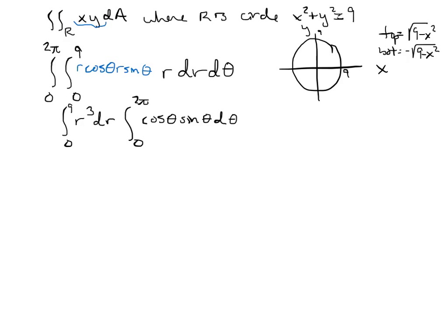Alright, so now I can just go ahead and integrate all of this. So I am going to take the integral of r to the fourth, that's over four. I've got to evaluate that from zero to nine. So that's nine to the fourth over four. So that is 6561 divided by four. So that was that first integral.